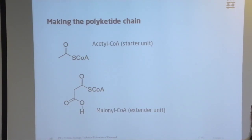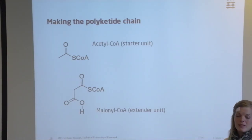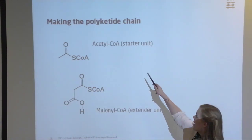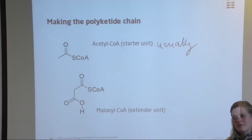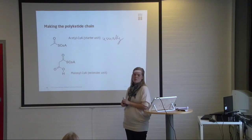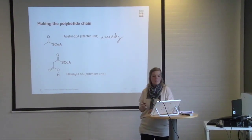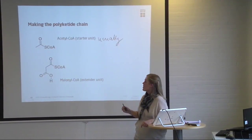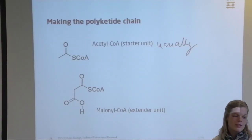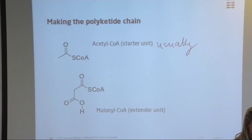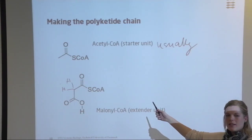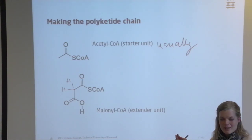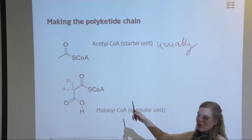When we start making a polyketide, the enzyme has a loading module — this is where it all begins. We have a starter unit: acetyl-coenzyme A is usually the starter unit, though nature always finds modifications to the rule. Then we have an extender unit: malonyl-coenzyme A, a modified form of acetyl-coenzyme A. What's very useful about malonyl-coenzyme A is that it has two protons sitting here that are very acidic — flanked by two carbonyl groups on each side, with a delocalized pi-electron system that pulls away electrons from those protons.